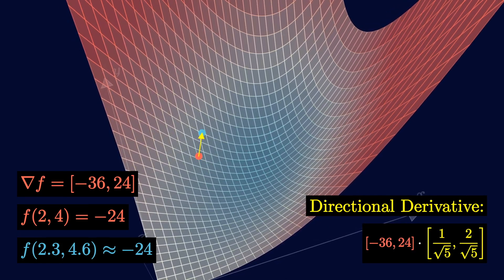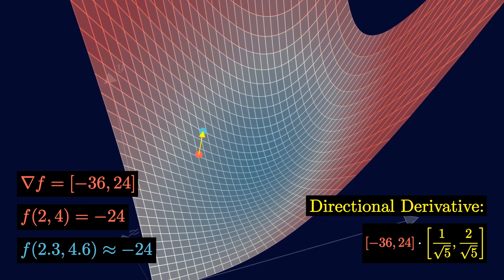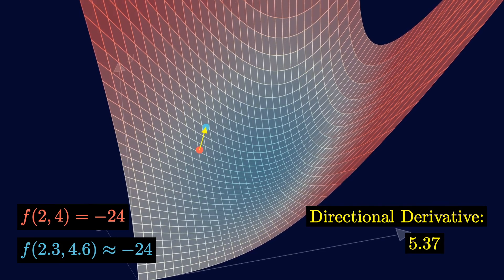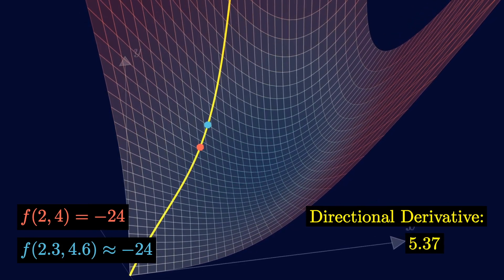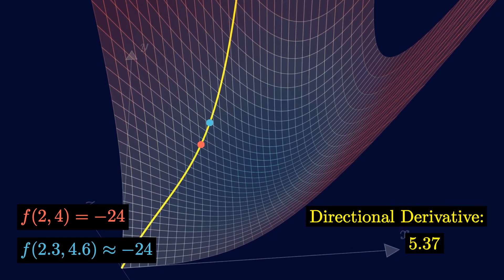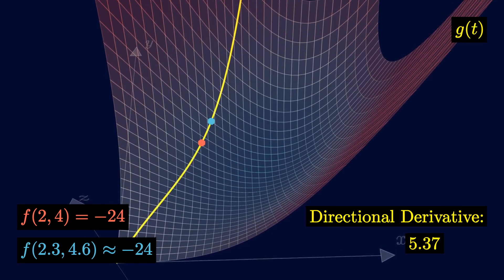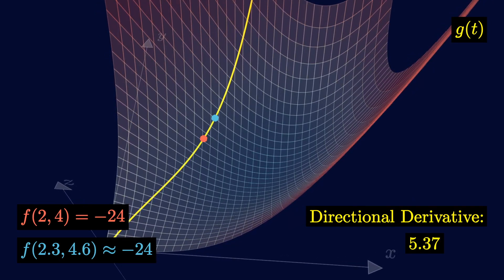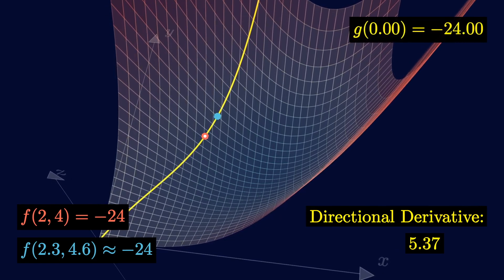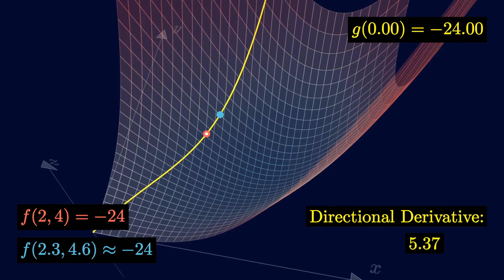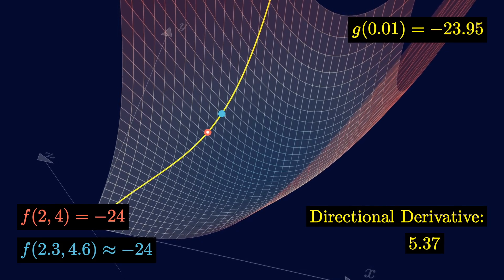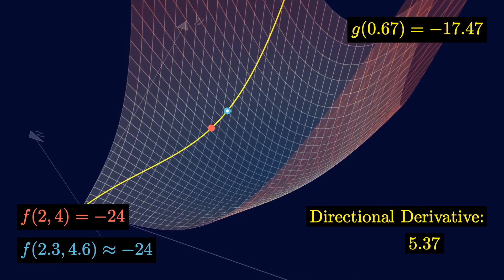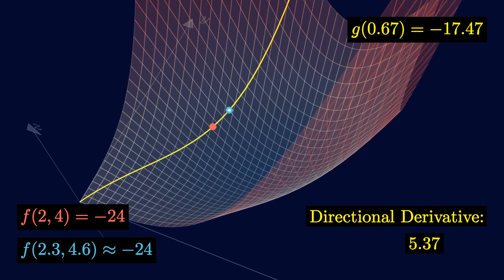Remember that the directional derivative is the dot product between the gradient and a unit length direction vector. Here, this direction points from the red point to the blue point. This is around 5.37. If we look at this slice of the function, we can form this one-dimensional parametric curve, and we can call this function g. We can define the input t as the distance away from the red point along this curve. So at t equals 0, g of 0 is just the value at the red point. The distance from the blue point to the red point is roughly 0.67. So g of 0.67 gives the value at the blue point.